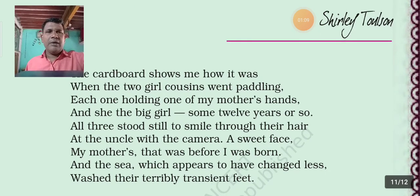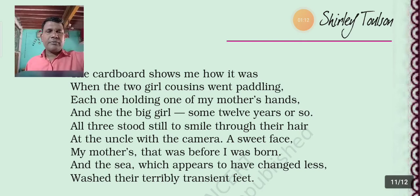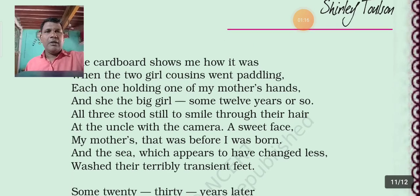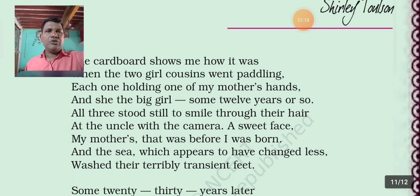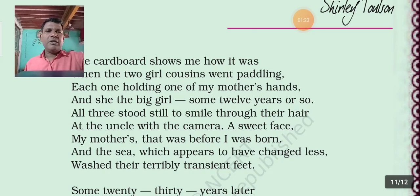All see the big girl, some twelve years or so — in this line, the S letter and sound is repeated, so alliteration is used. All three stood still to smile through their hair — the S letter and sound is repeated here, so alliteration is the figure of speech in this line.